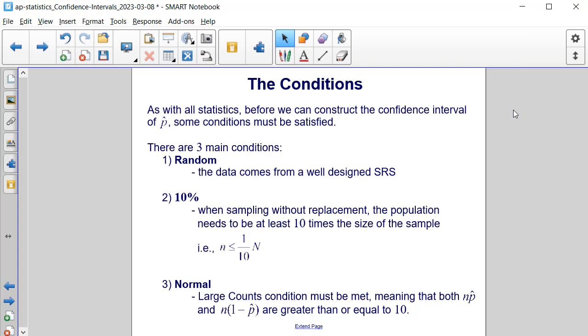The second condition is 10%, or when sampling without replacement, the population needs to be at least 10 times the size of the sample. In other words, our sample size must be less than or equal to one-tenth times the population size.